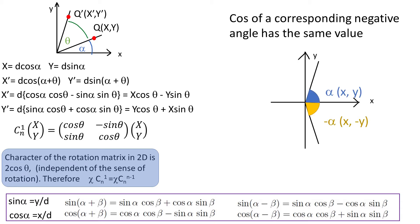Also notice that cos alpha and cos minus alpha have the same value, because they share the same x value and cos is x over d. That means that the character of our matrix is independent of the sense of rotation. Therefore cn1 will have the same character as cn n-1, for instance c31 has the same character as c32, 2 being n-1.